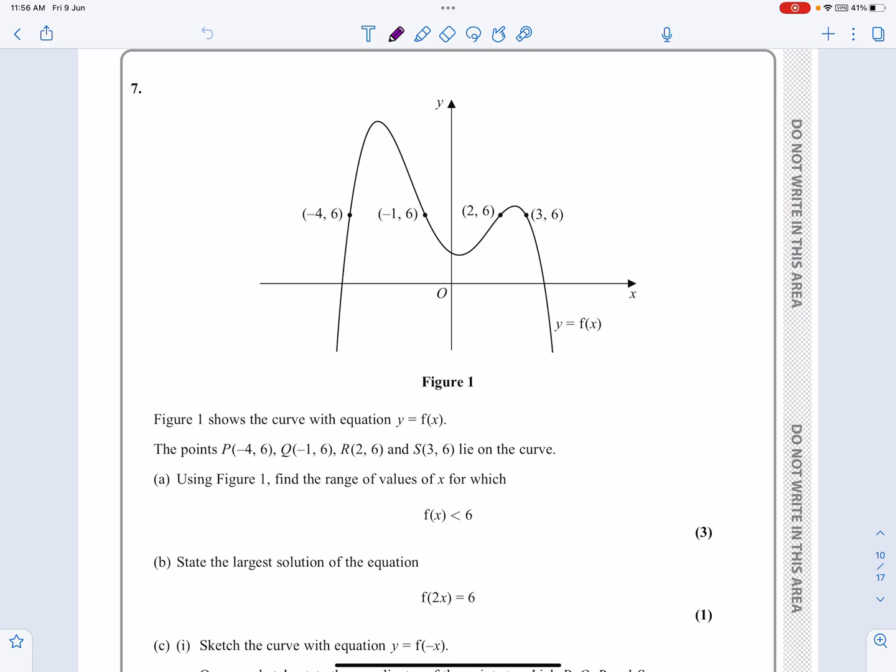but let's just look at the first part. So the first part says we've got this curve, Figure 1, and it says it goes through those four points there. Using Figure 1, find the range of values for which the function is going to be less than 6. Okay, so because they've got the graph there, I'm quite happy to use the graph. If I can draw a line in then, that's just going to cut through those four points. Just move up slightly, so that's in the right place here, just there.